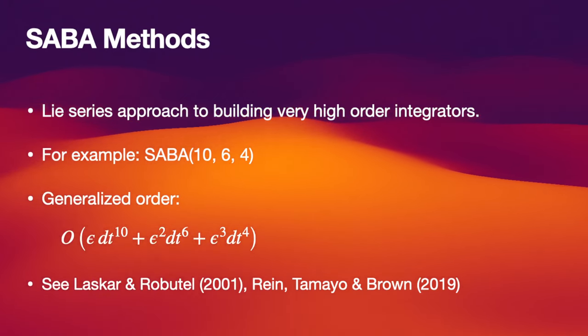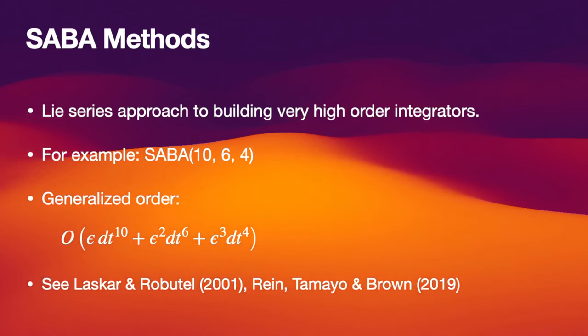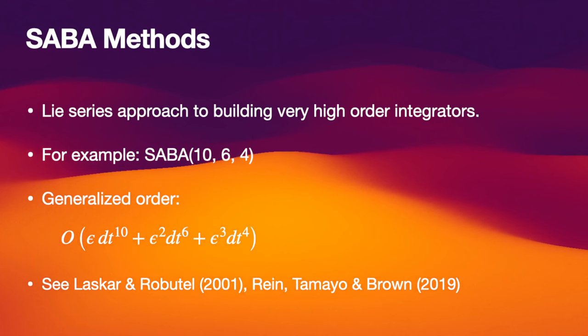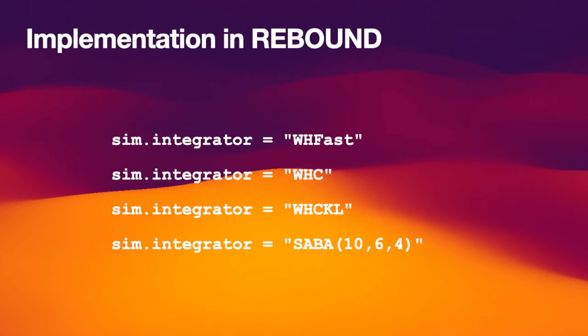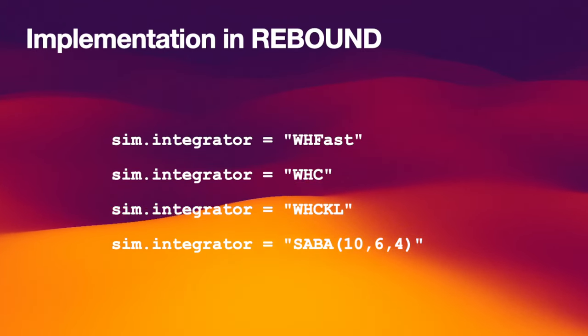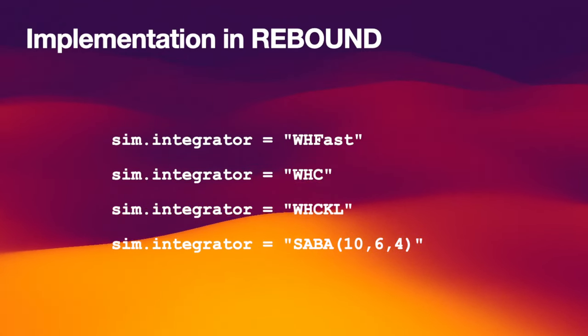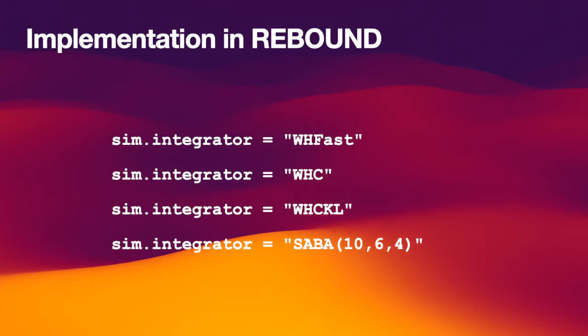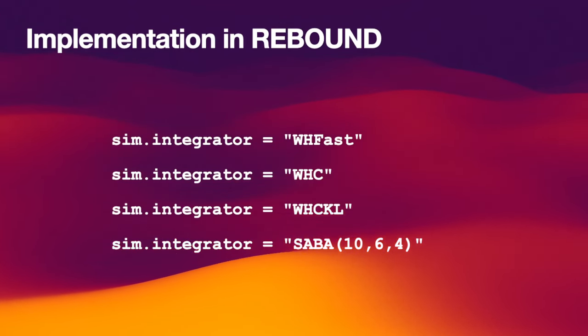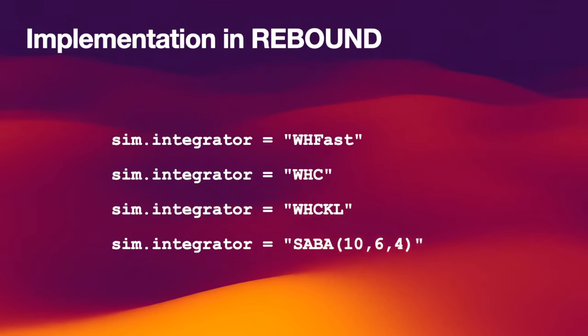So this is even more accurate in many cases than some of the other Wisdom-Holman methods we just talked about. If you want to read up on these methods more, have a look at Laskar and Robutel 2001 or the review paper by Rein, Tamayo and Brown 2019. The nice thing about all these high order Wisdom-Holman methods that are implemented in rebound is that they're trivial to use.